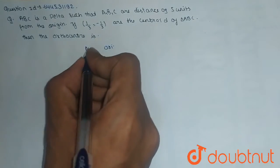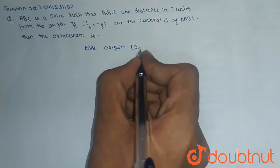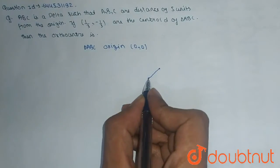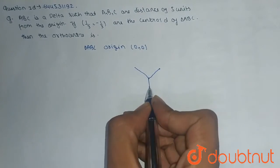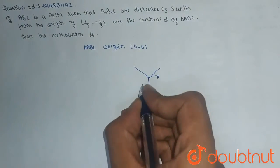Triangle ABC is from origin (0, 0). All the points of the given triangle are at equal distance. Let's consider it as R.